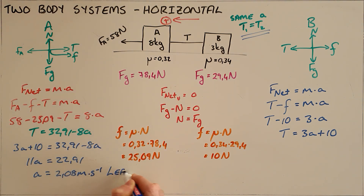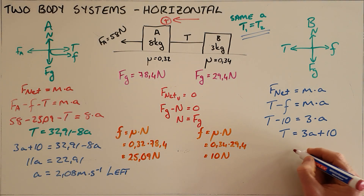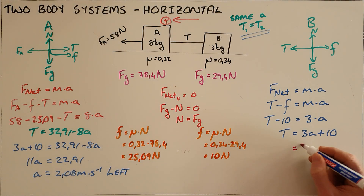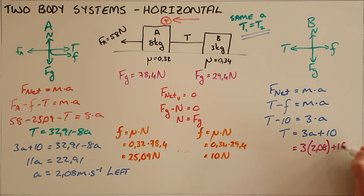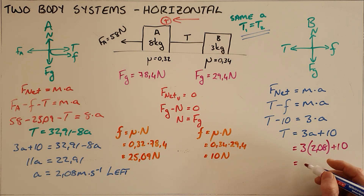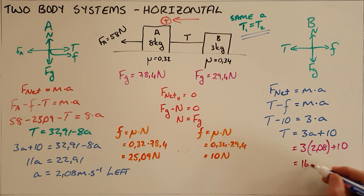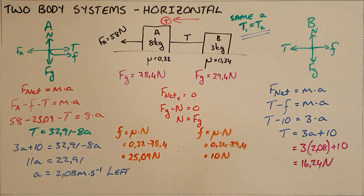Acceleration is a vector so it must have direction. Finally, once I have the acceleration, substituting 2.08 plus 10 gives the tension in this rope as 16.24 Newtons.